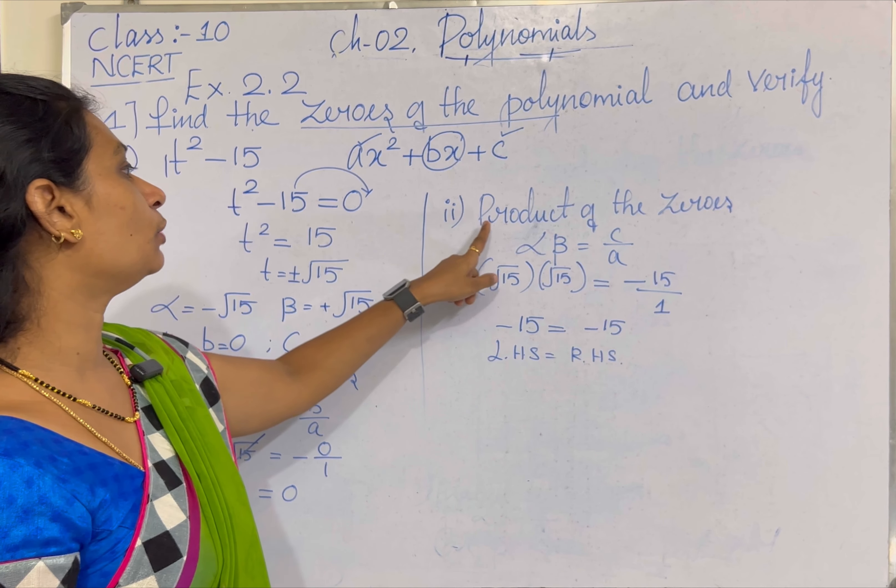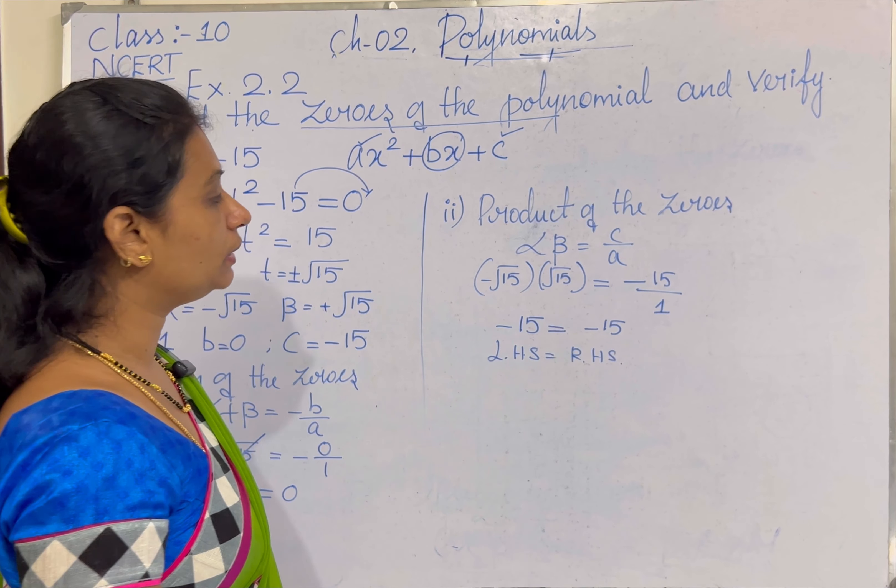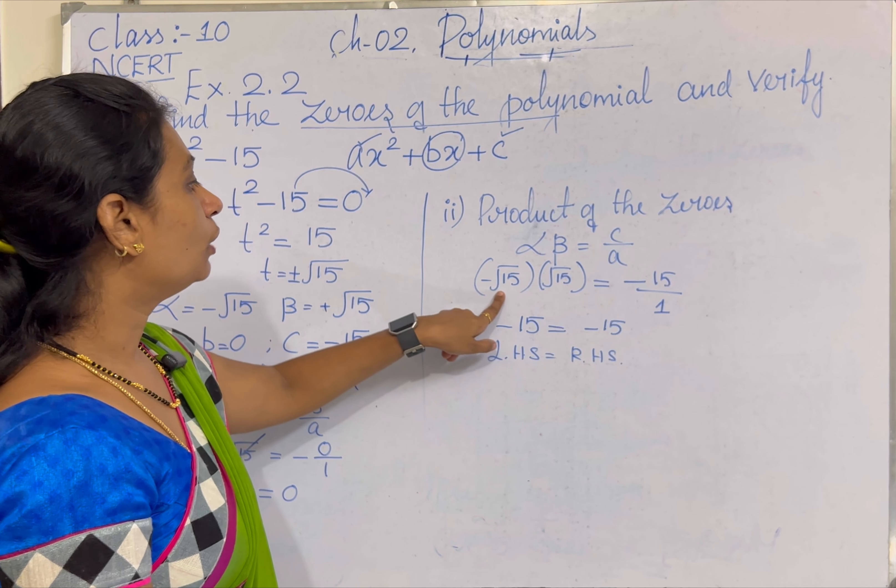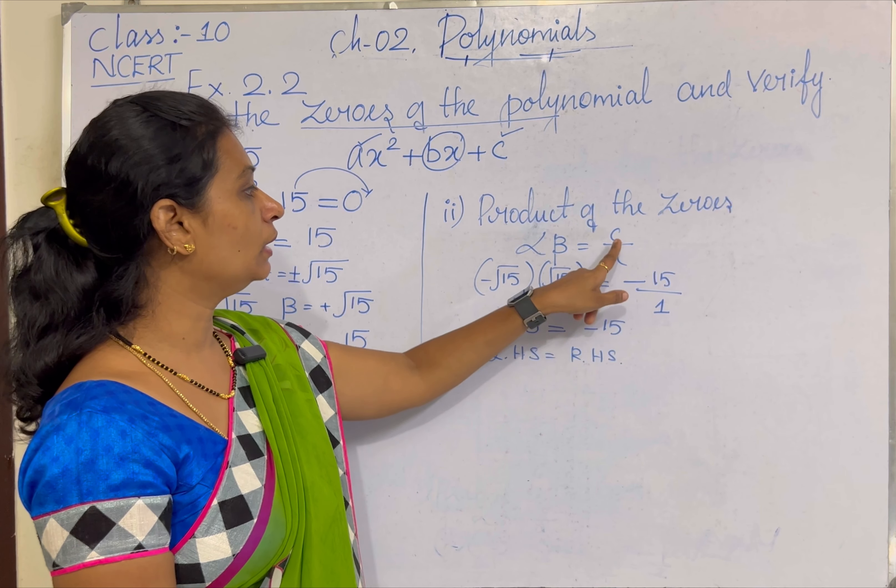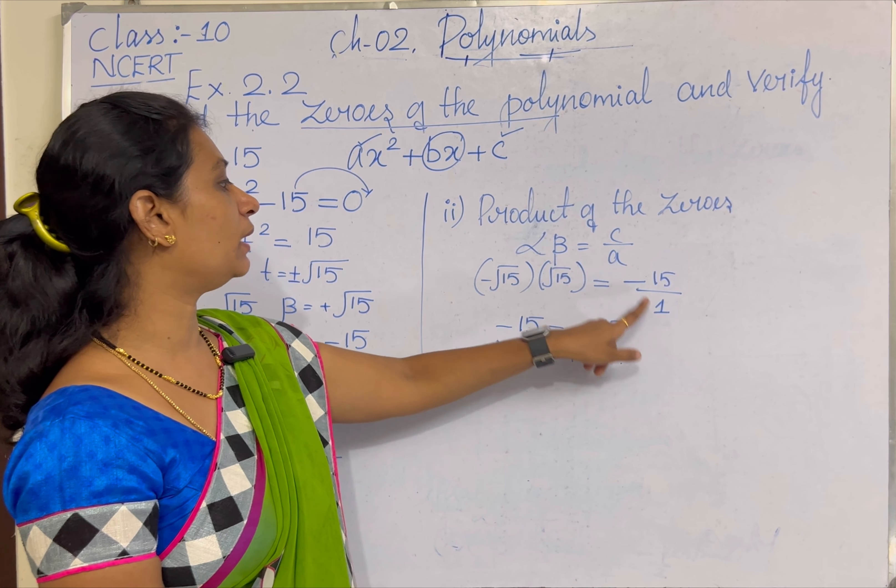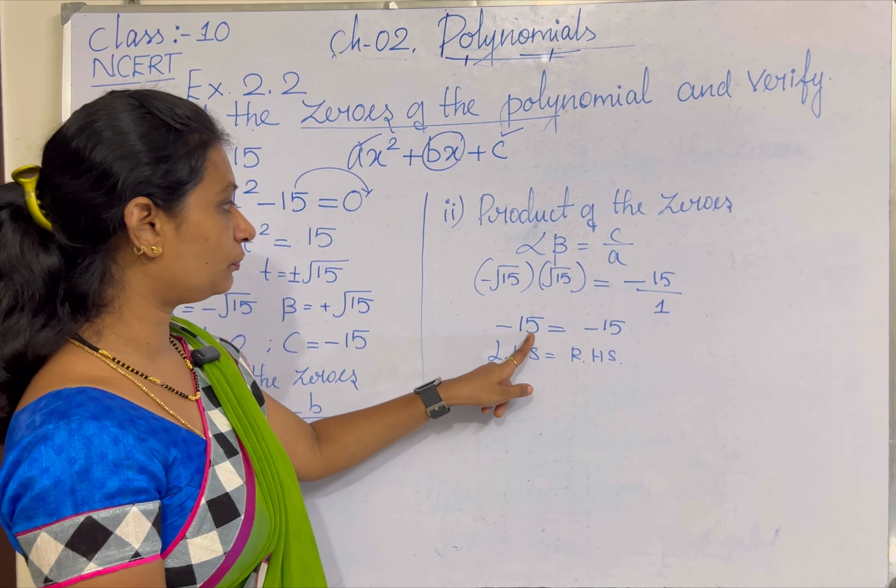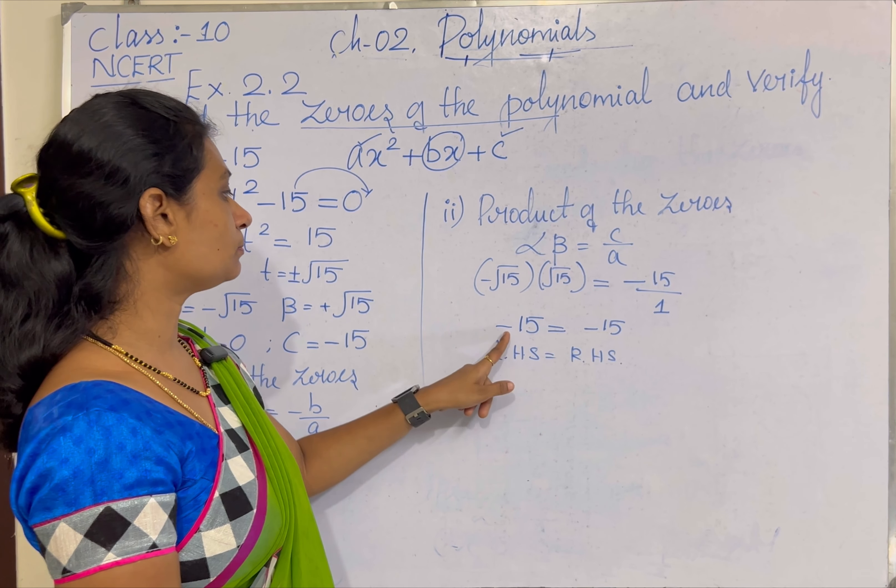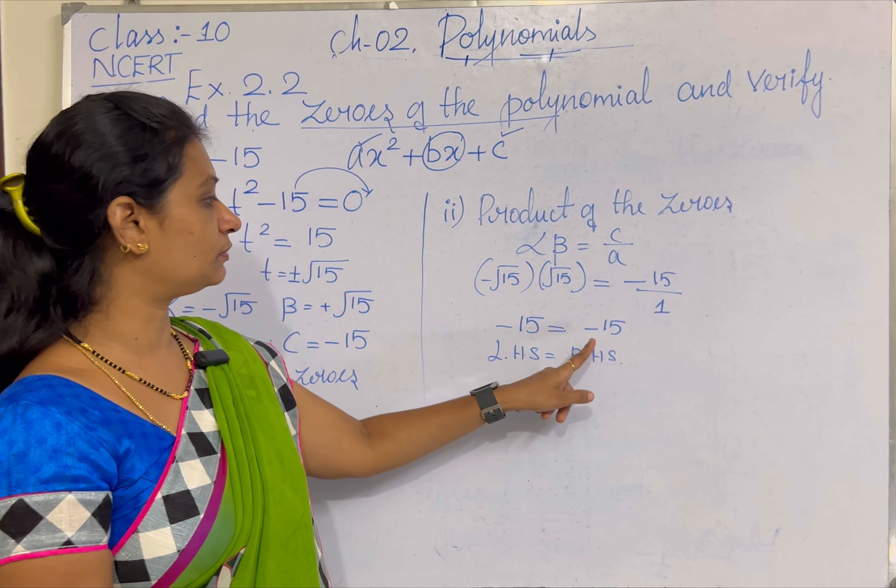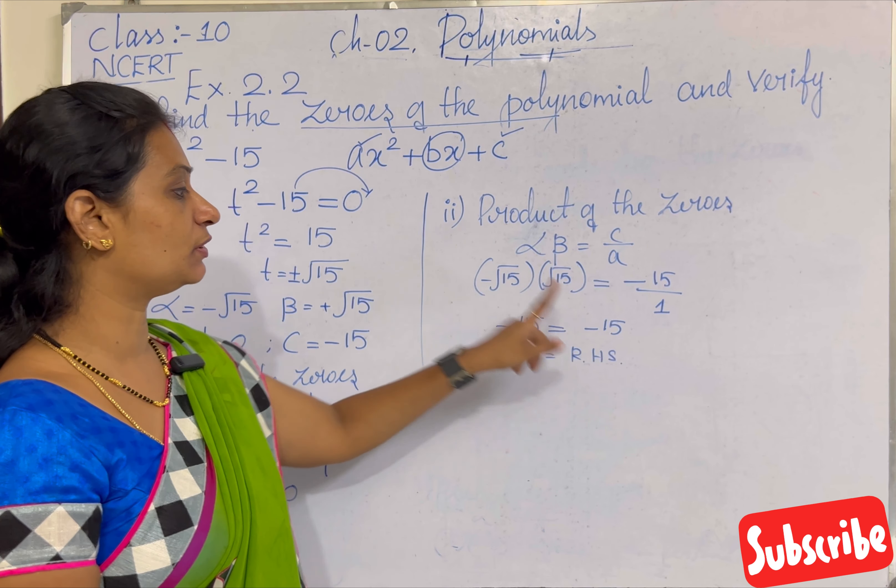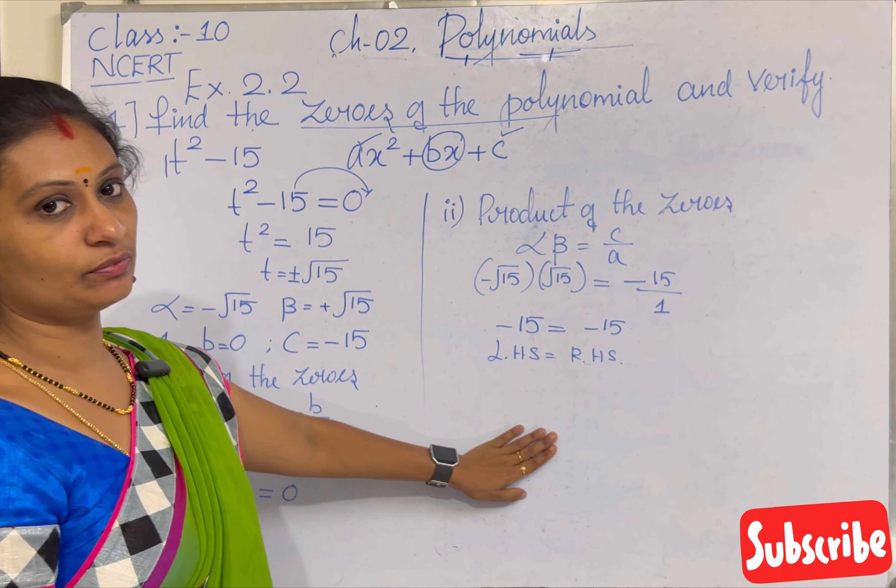Second thing we need to verify the product of the zeros. We need to multiply alpha into beta equal to C by A. Minus root 15 into plus root 15 equal to C minus 15 by A value 1. Root 15 into root 15 equal to 15, plus into minus is minus. So both sides we are getting minus 15. LHS is equal to RHS. Hence verified.